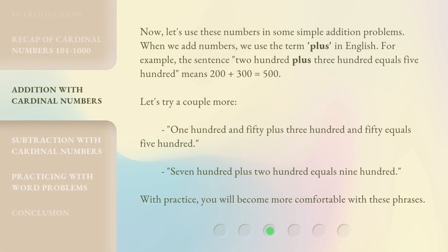Now, let's use these numbers in some simple addition problems. When we add numbers, we use the term "plus" in English. For example, the sentence 200 plus 300 equals 500 means 200 plus 300 equals 500. Let's try a couple more: 150 plus 350 equals 500; 700 plus 200 equals 900. With practice, you will become more comfortable with these phrases.